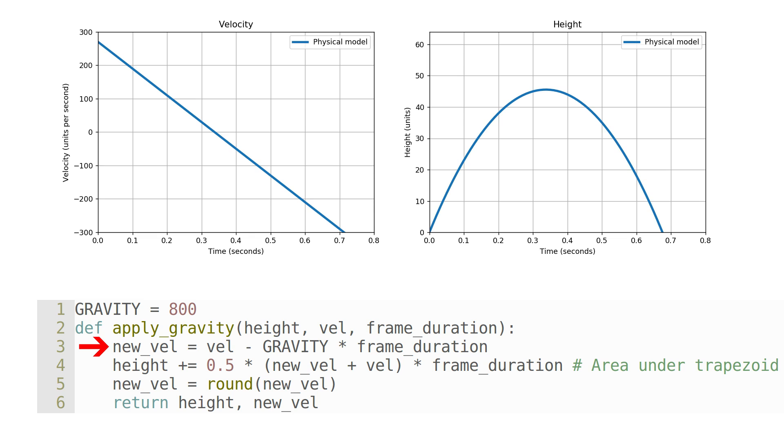The velocity is decreased by the frame duration multiplied by 800, the acceleration due to gravity. The height is then increased by the area under the velocity curve over the time for this step. The steps just described correspond exactly with the physical simulation, and if this were the full story then the game simulation would perfectly match the physical model.